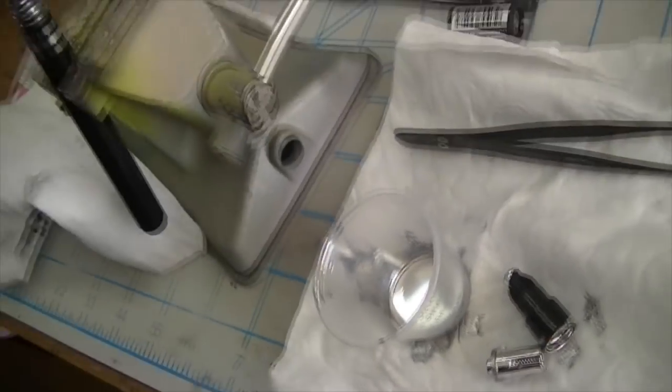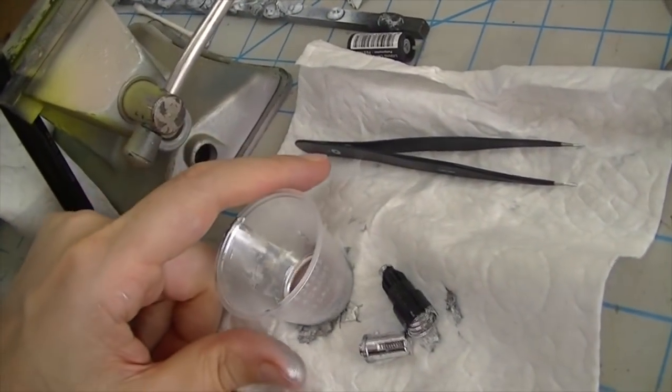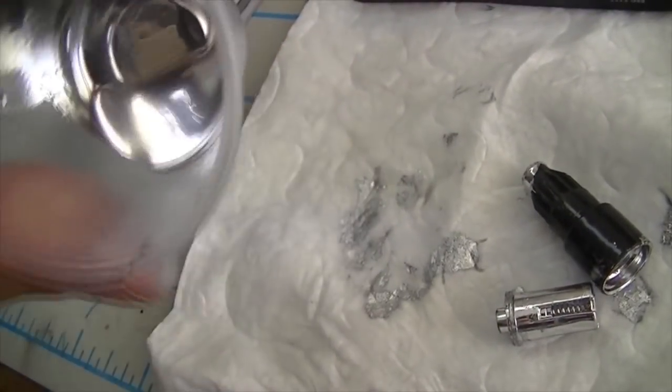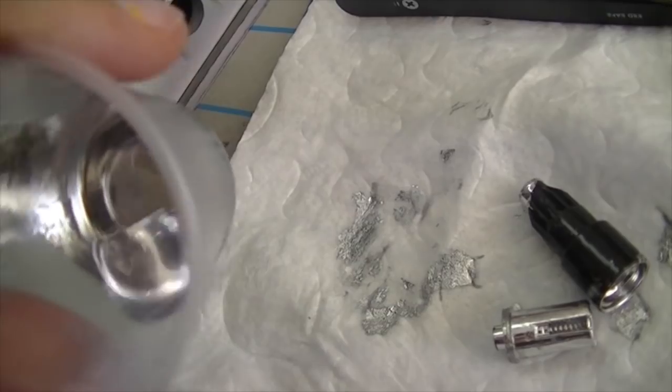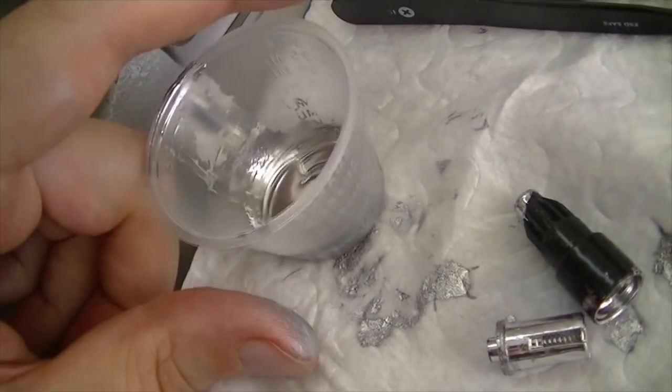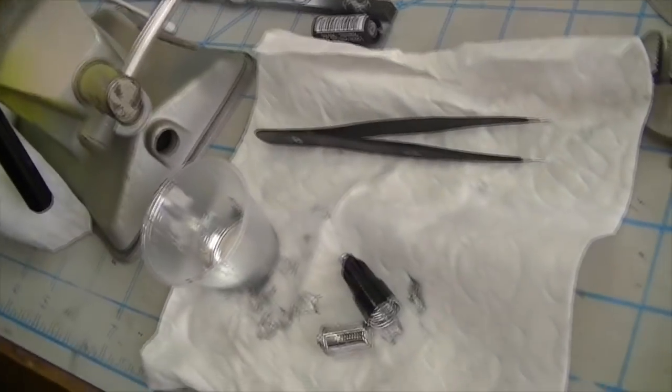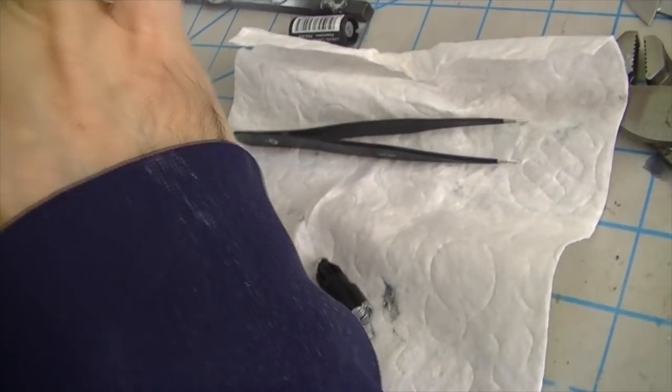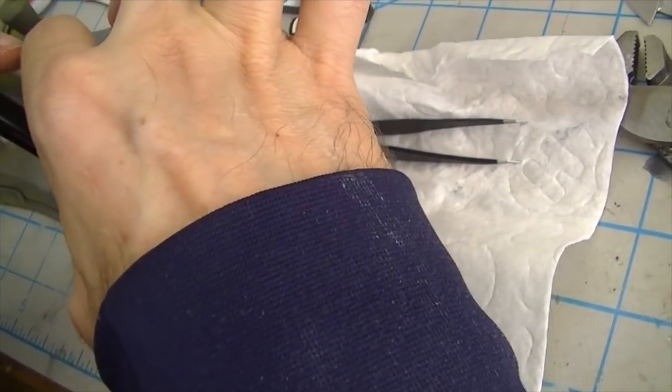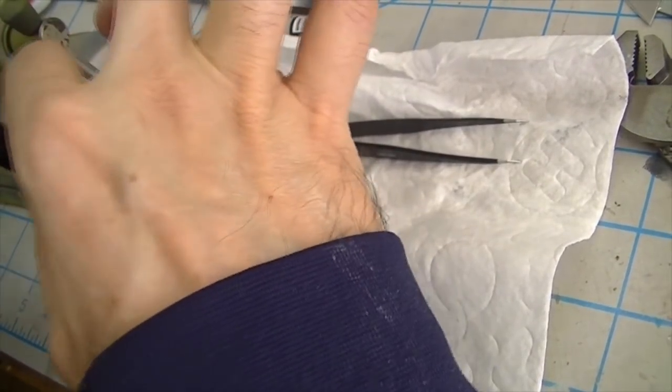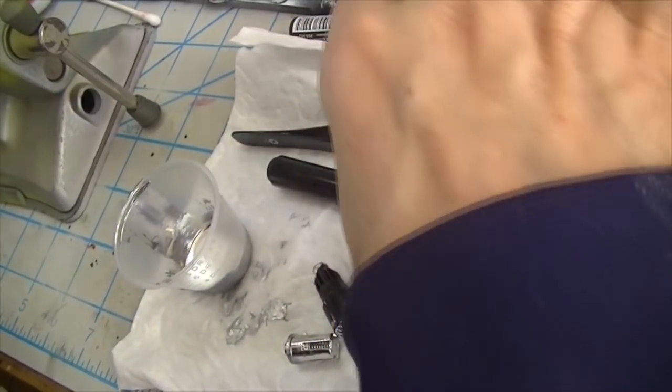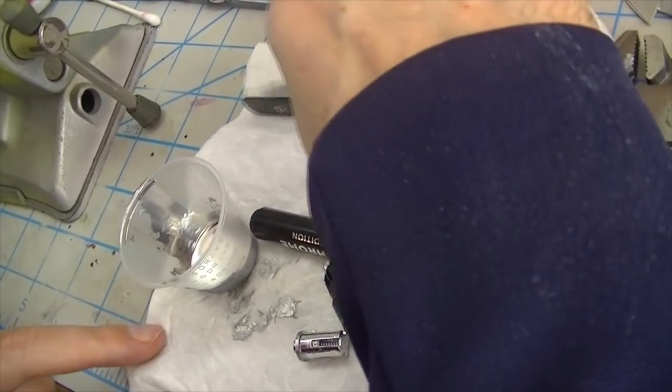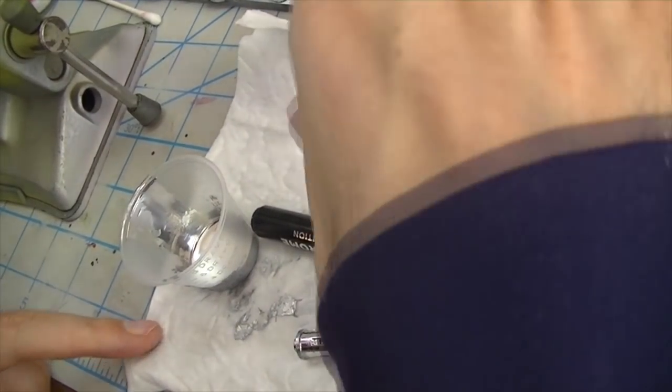The first thing I did was dump some of the ink out into this cup. I mean, that's pretty cool looking, right? Looks like liquid silver. I've got this pen pretty well emptied and I think I'm going to just write it off at this point and call it a sacrifice for the cause of science.